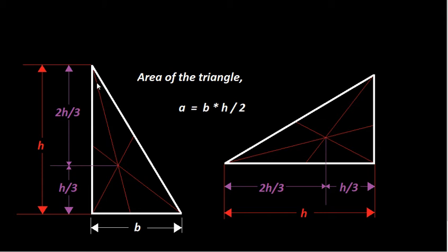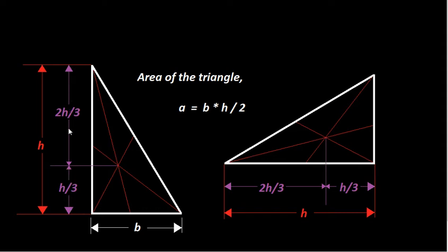For a triangle of base B and height H, you can find the center of gravity by drawing straight lines from each corner to the midpoint of the opposite side and taking the intersection of the three lines. You don't have to do this by drawing — the center of gravity is already known to be H/3 from the base and 2H/3 from the apex.